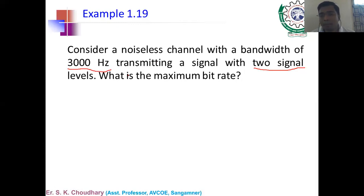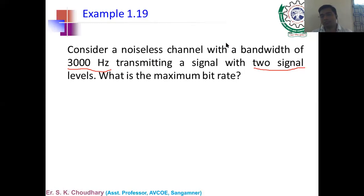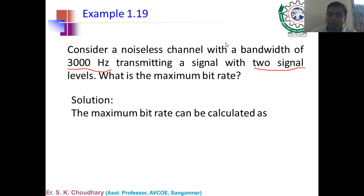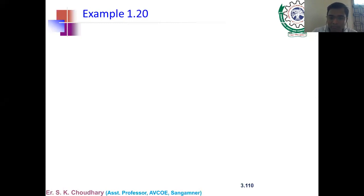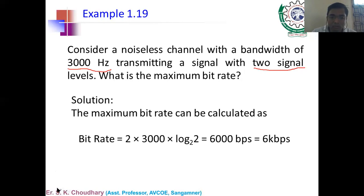The maximum bit rate is calculated as: Bit Rate = 2 × Bandwidth × log₂(L) = 2 × 3000 × log₂(2) = 2 × 3000 × 1 = 6000 bits per second, or 6 kbps. This is a straightforward formula-based calculation.